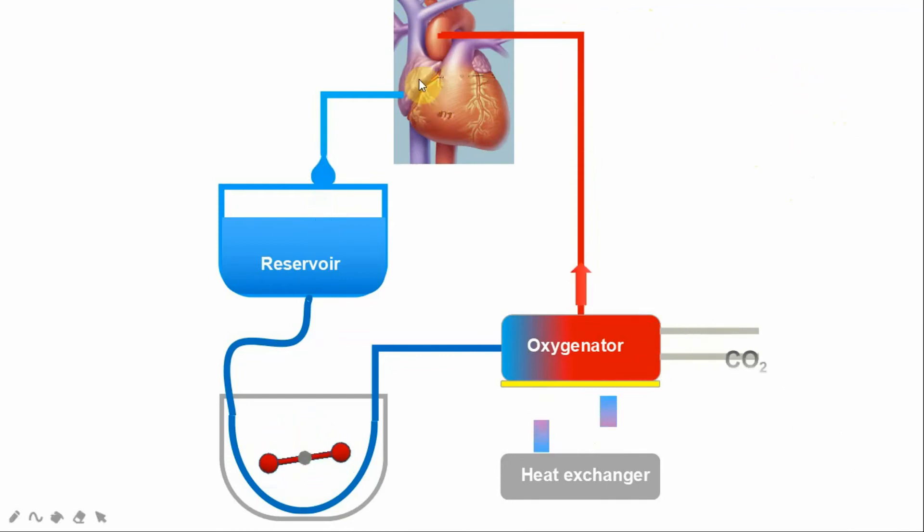Let me summarize again. We are taking the deoxygenated blood from the right side of the heart, superior vena cava, inferior vena cava, putting to the reservoir. This blood is then transported to the oxygenator, and the function of the oxygenator is to add oxygen, remove carbon dioxide, and optimize the temperature. Once that is done, this oxygenated blood is then pumped into the aorta, and that oxygenated blood is transferred to the rest of the body.